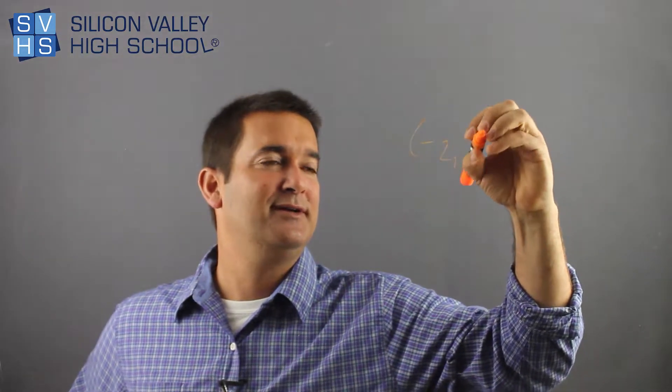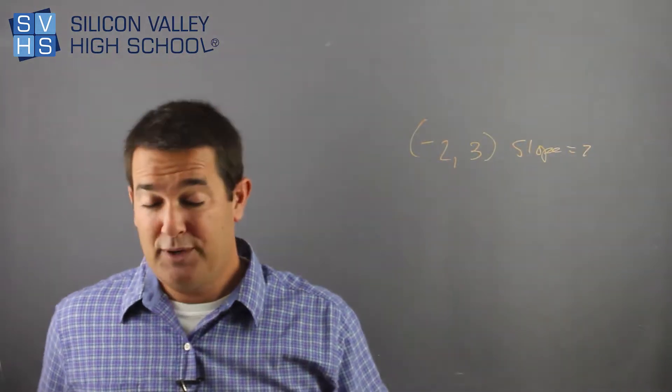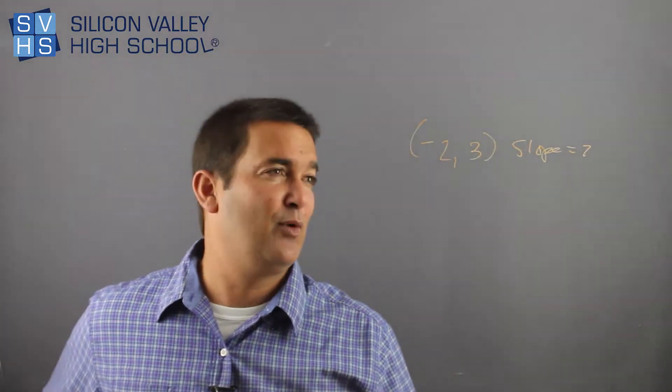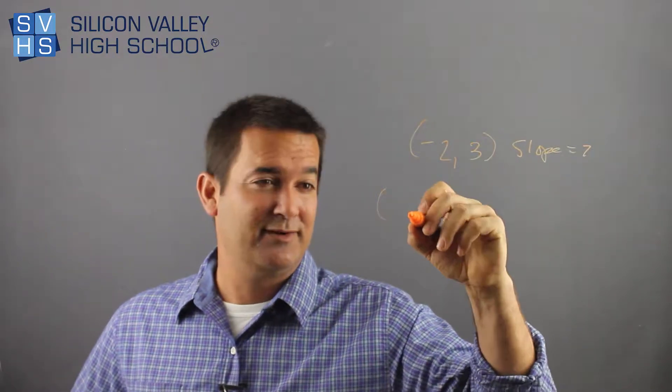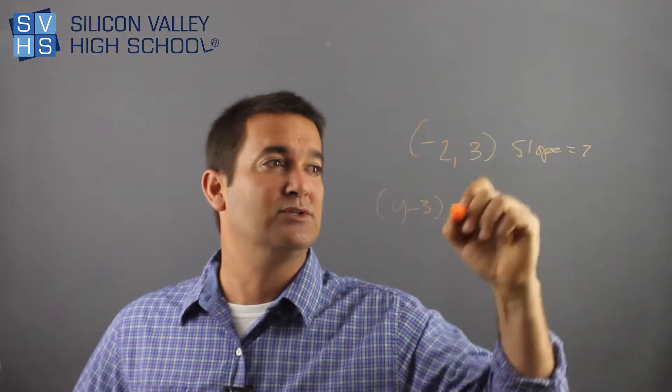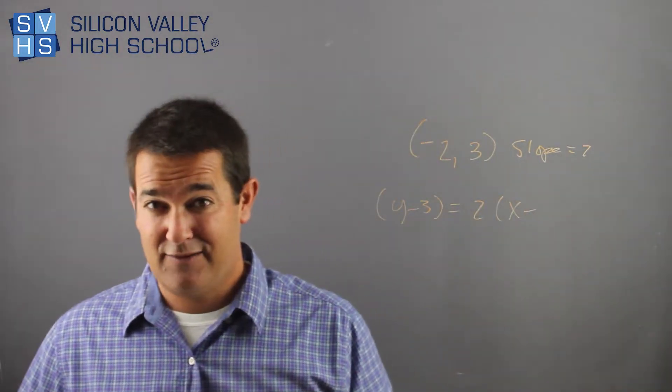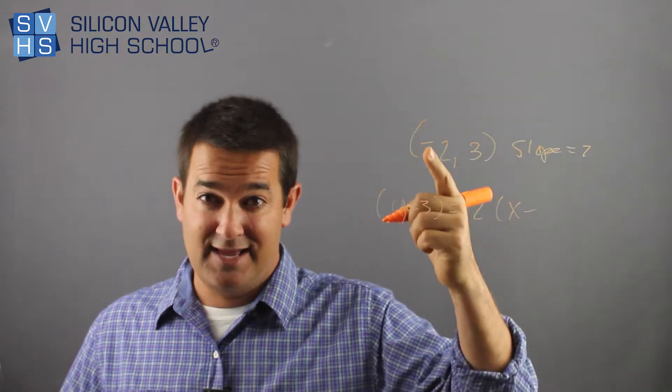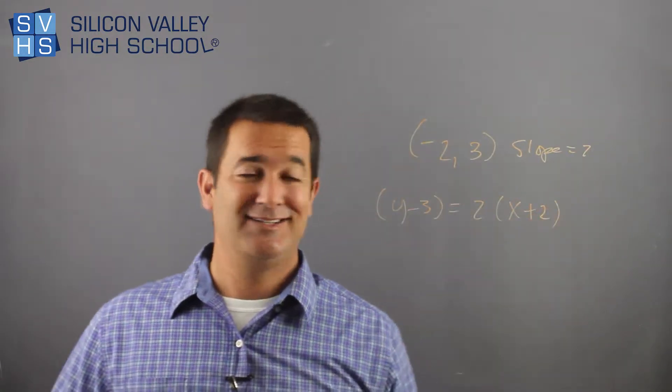What if it's (-2, 3) and your slope is 2? Write an equation of a line in point-slope form. Remember, it's Y minus the Y value. The Y value is 3. So Y minus 3 equals slope, which is 2, times X minus, be careful, the X value. What's X minus a negative 2? Remember, minus a negative becomes plus 2. That is your answer.